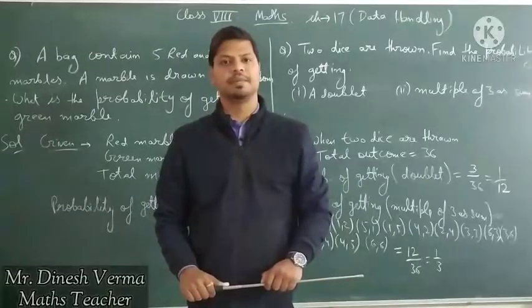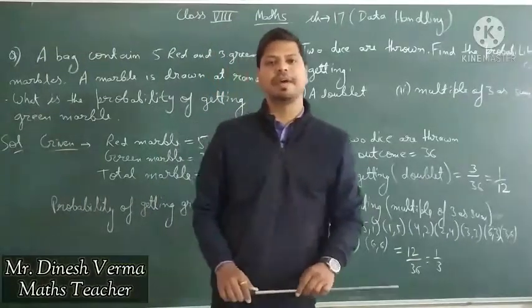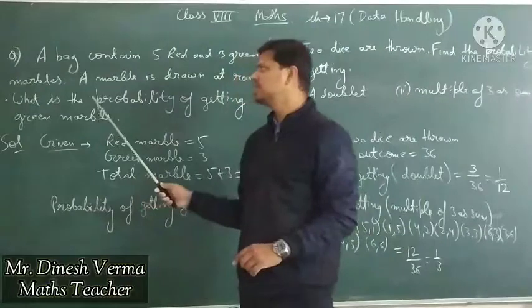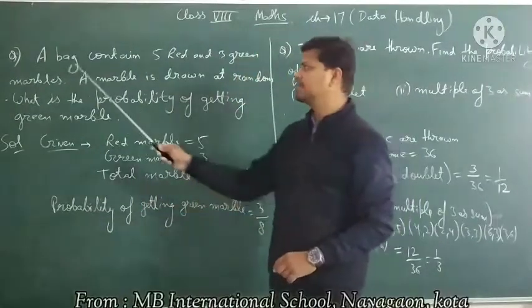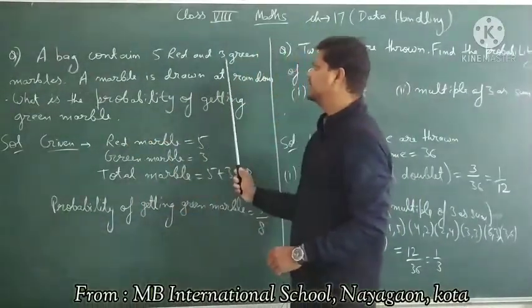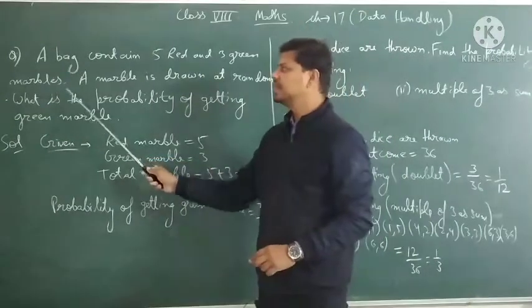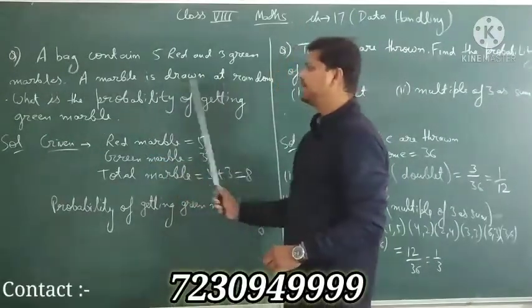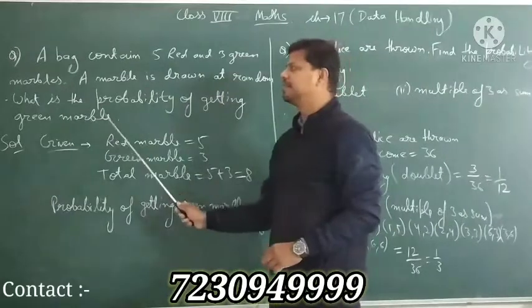Hello students. In our previous video we discussed some questions related to probability, and in this video we have also discussed some questions related to probability. The question given to you is: a bag contains 5 red and 3 green marbles, a marble is drawn at random. What is the probability of getting a green marble?